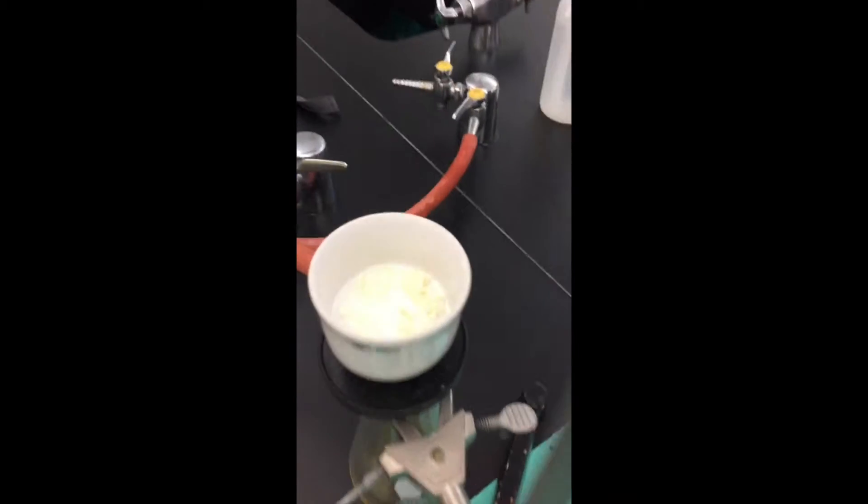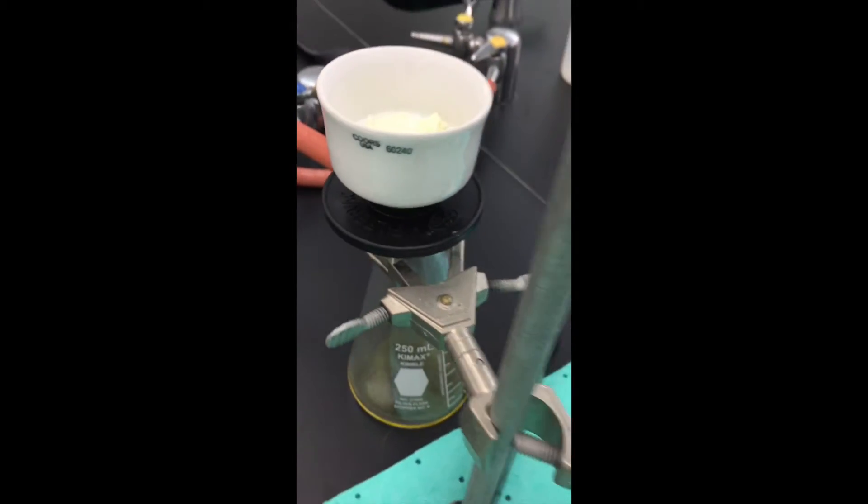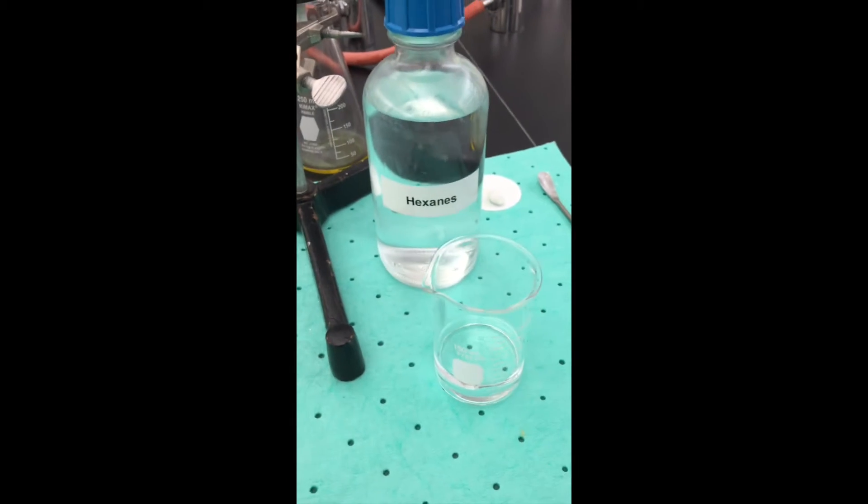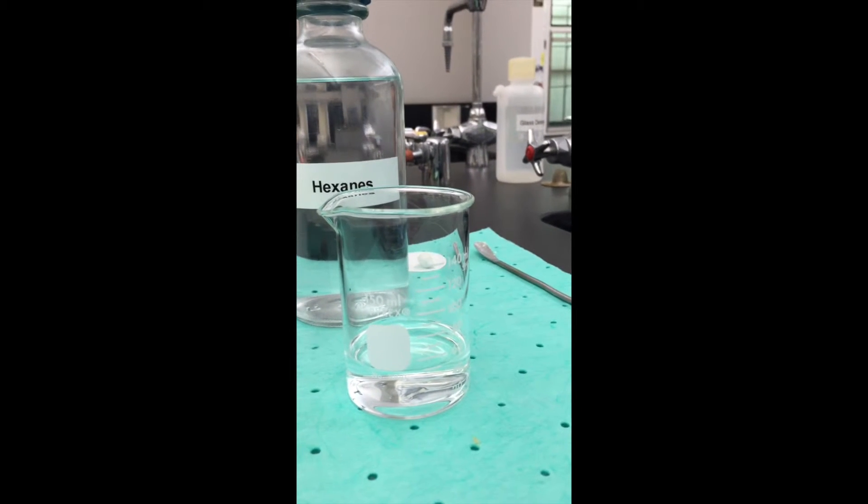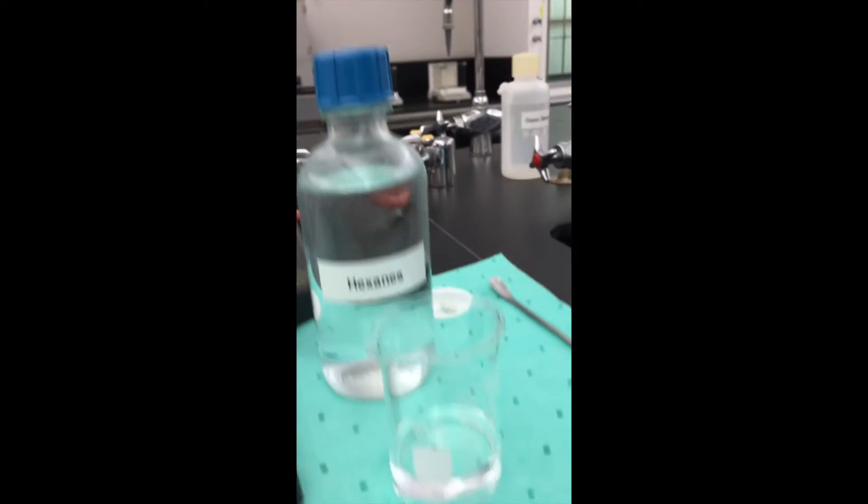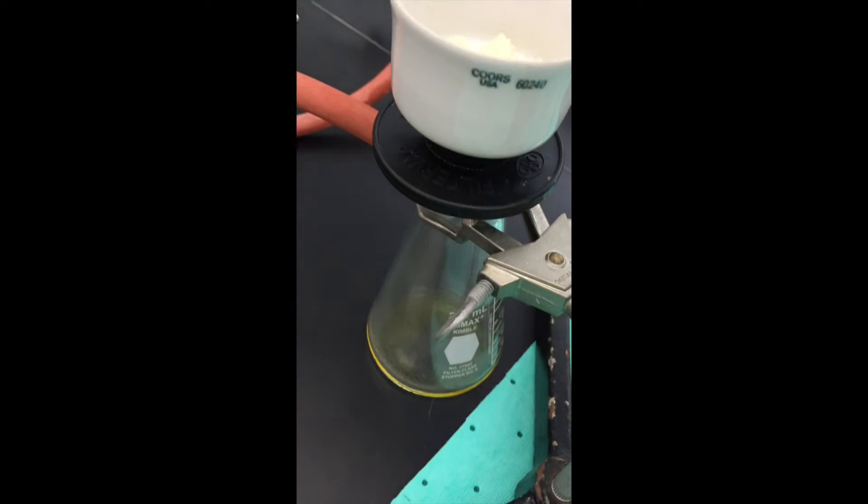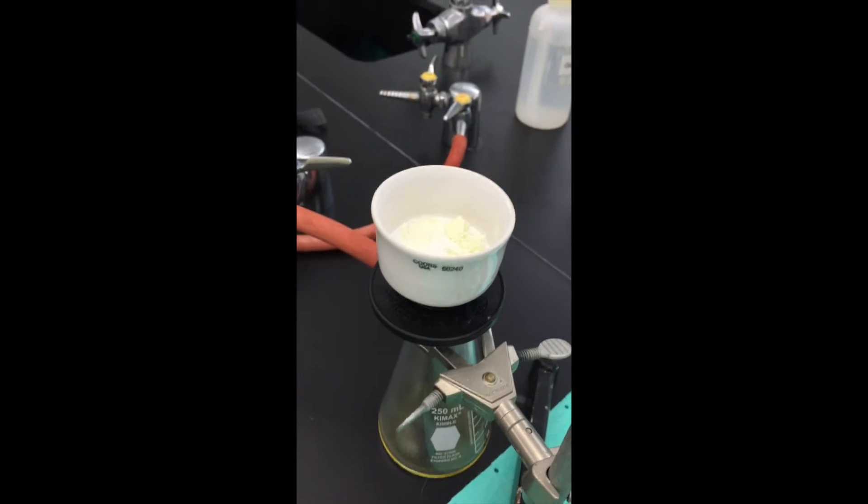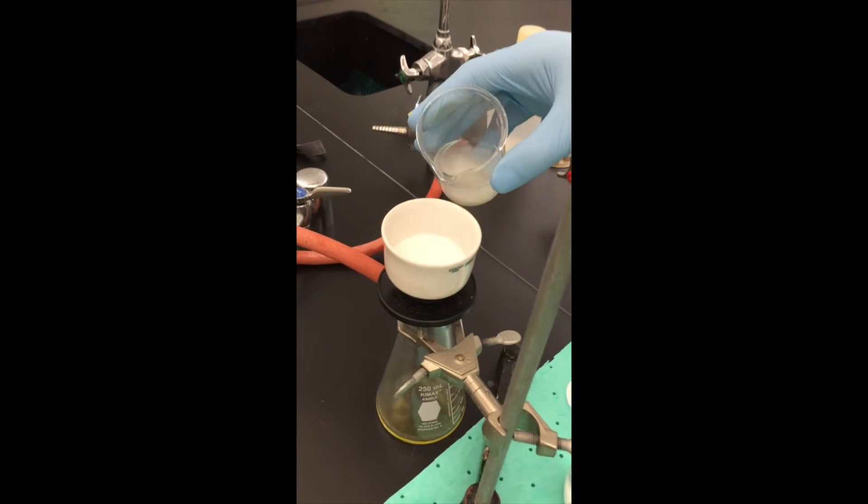Okay, so now we are going to take the solid that precipitated out for vacuum filtration, and we are going to suspend that in about 15 milliliters of hexanes liquid. And after we do that, we're going to re-filter it again with new filter paper back through vacuum filtration. And now the suspended product from the hexane is going to be filtered through.